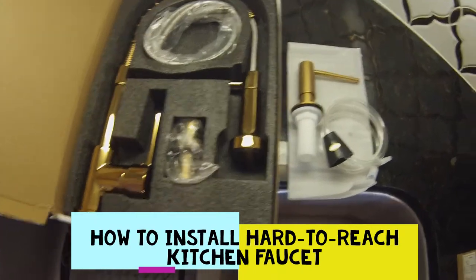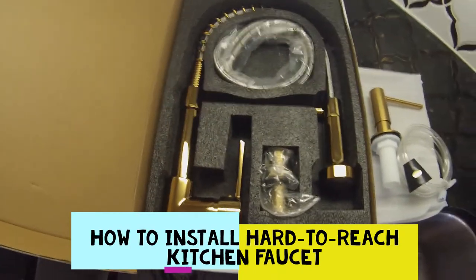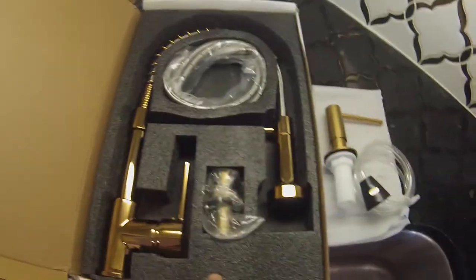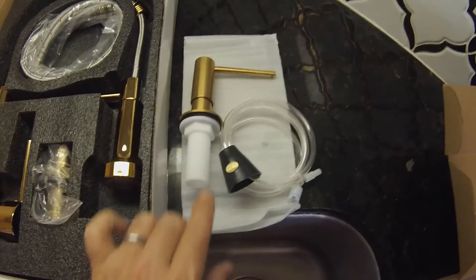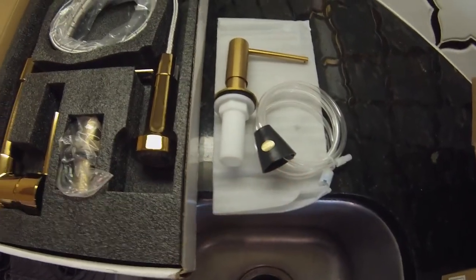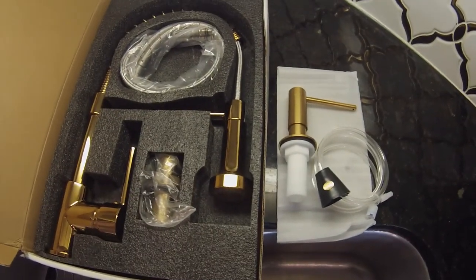Here we have our new soap dispenser as well as our new sink faucet. We'll go ahead and put those together according to manufacturer's instructions with threading it and everything. This one is unique because instead of having a container, it actually has a hose that goes straight into the bottle of soap. So hopefully that works, it should be a lot easier than having to refill it.